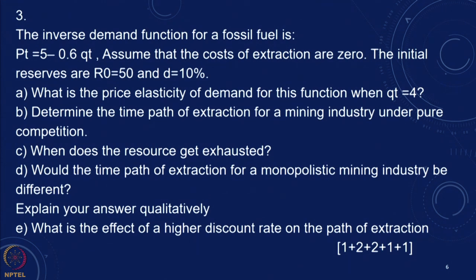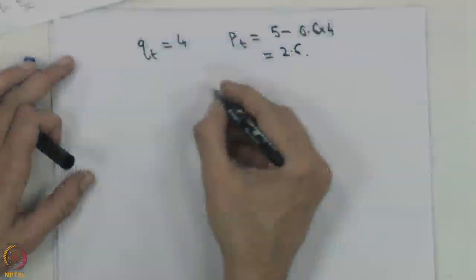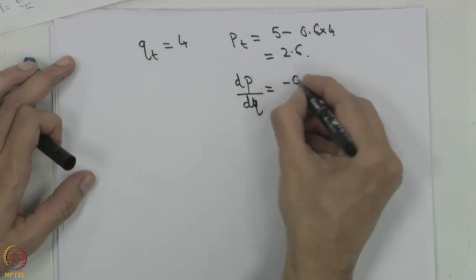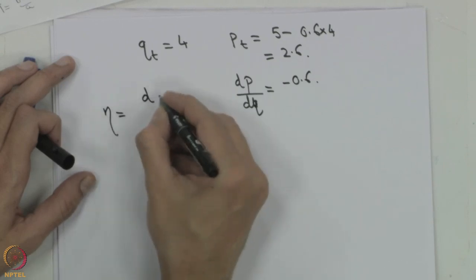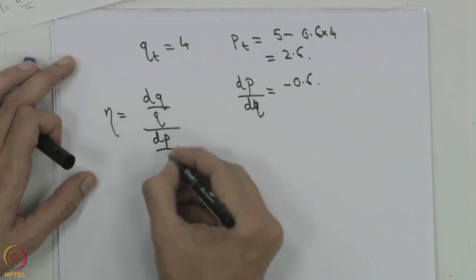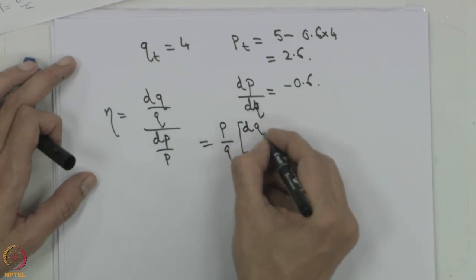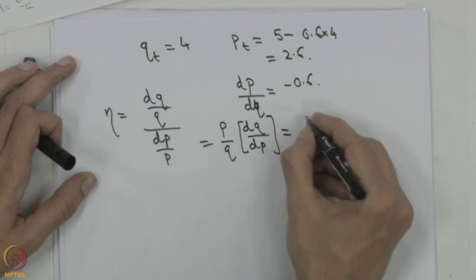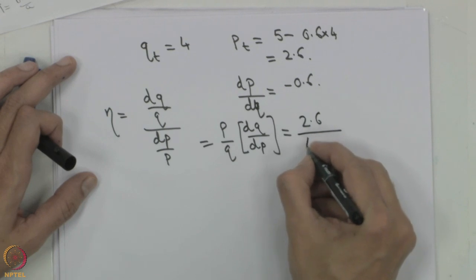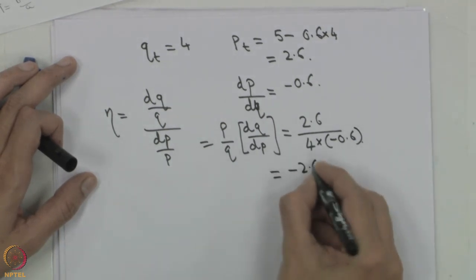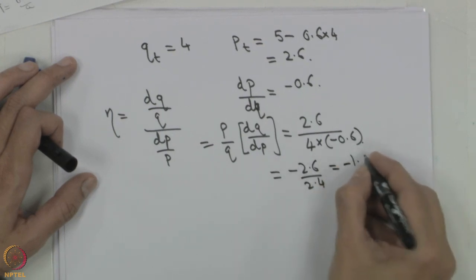This is straightforward. Qt is equal to 4, so we can find out Pt. Pt is 5 minus 0.6 into 4, which gives 2.6. And dP/dQ is minus 0.6. So the elasticity is (dQ/dP) multiplied by (P/Q). Substituting the values: P is 2.6, Q is 4, and dP/dQ is minus 0.6. So it is minus 2.6 divided by 2.4, giving minus 1.083.